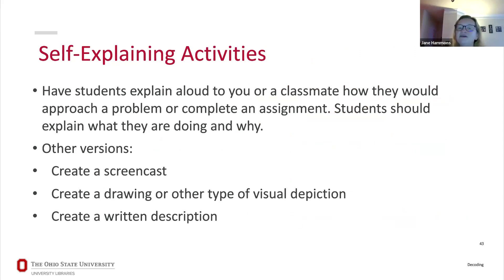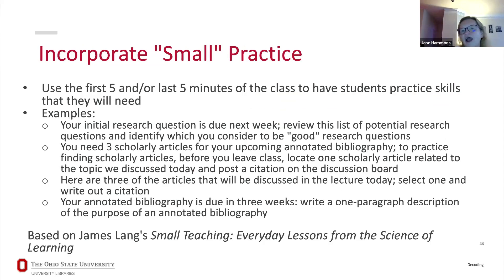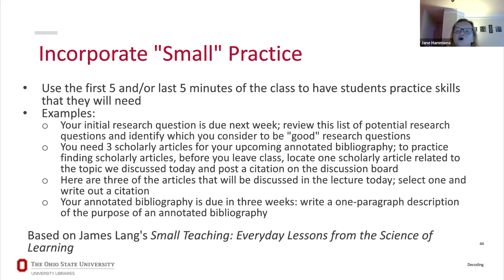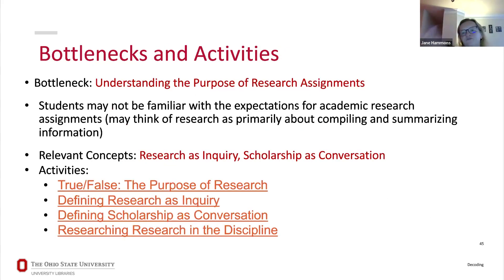Self-explaining activities are also valuable — just having students tell you out loud what they would do: 'here's how I would go about evaluating this source' or 'here's how I would cite this source.' You can hear where they're going wrong. Use the last five minutes of class to have students practice — if they need to find three articles for an annotated bibliography, have them find one scholarly article and send it to you. If you see that 20% sent sources that aren't scholarly articles at all, you know you need to talk more about what scholarly articles are.